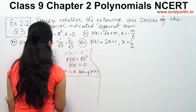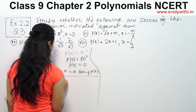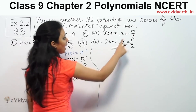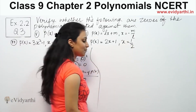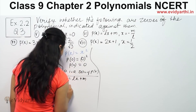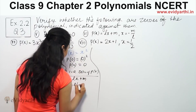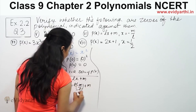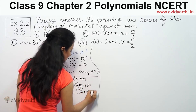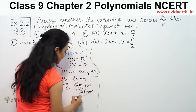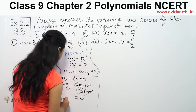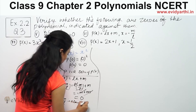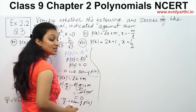The same thing for part number 6, which is p(x) equal to lx plus m. We want to check if x equals minus m by l is a zero. So we check by substituting x equal to minus m by l, and we find that minus m by l is a zero of p(x).